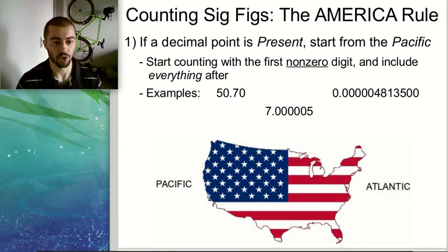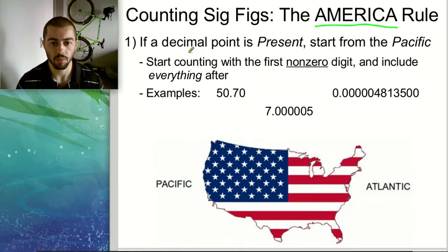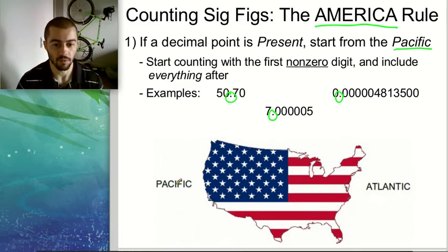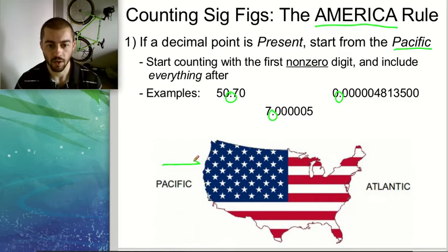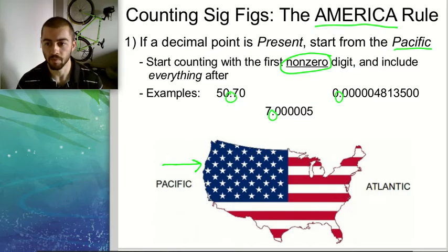How do we count sig figs if we didn't measure the value — if we're just looking at a number on a page and trying to decide how many sig figs it has? The easiest way is to use the America rule. If the decimal place is present, we start from the Pacific. Hopefully we're up to date on our geography — the Pacific is on the west coast of the United States. So we're going to come in and start counting from the left side, starting with the first non-zero digit, and we include everything after that as being significant.